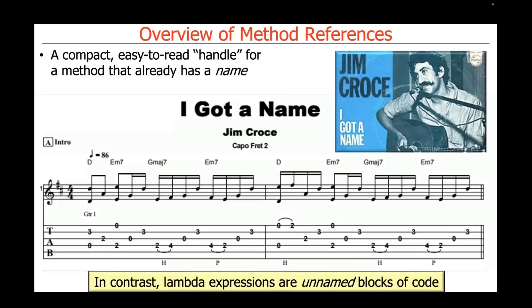So what is a method reference? A method reference is a compact, easy to read handle for a method that already has a name. In contrast, Lambda expressions are unnamed blocks of code. They don't have a name.